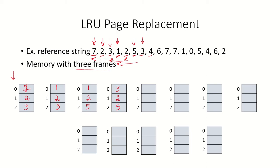The next reference is for page 4. Looking backwards, page 3 and page 5 were used recently, so page 2 will be replaced by page 4, causing a page fault. Next, page 6 is referenced — not in memory, so a page fault occurs. Looking backwards, page 5 will be replaced by page 6. Then page 7 is referenced; looking backwards, page 3 is the least recently used, so page 3 will be replaced by page 7, causing a page fault.